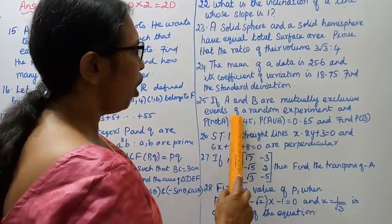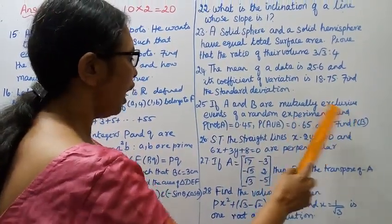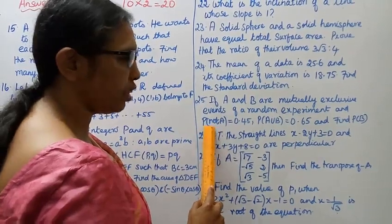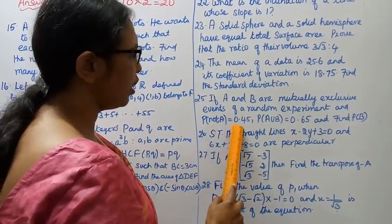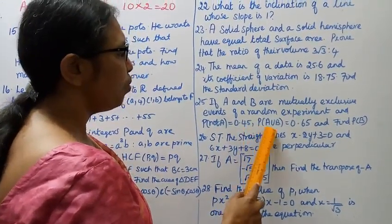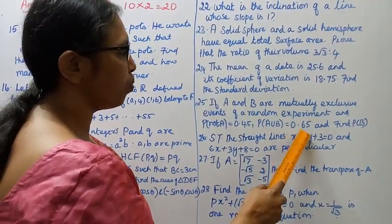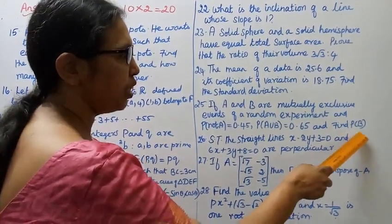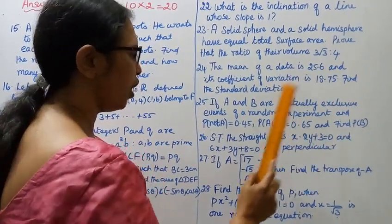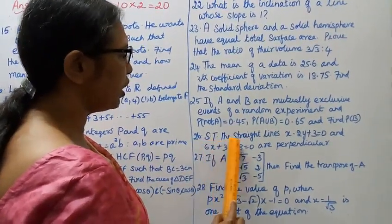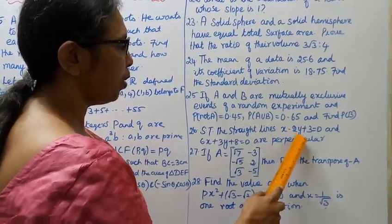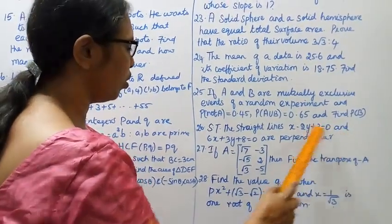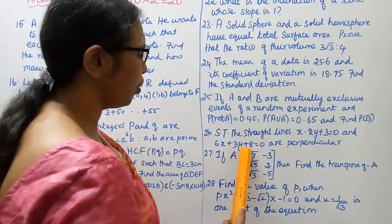Question 25: If A and B are mutually exclusive events of a random experiment and P(not A) = 0.45, P(A ∪ B) = 0.65. Question 26: Show that the straight lines x - 2y + 3 = 0 and 6x + 3y + 8 = 0 are perpendicular.